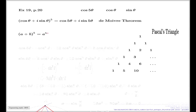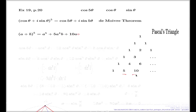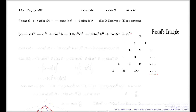Here's the expansion: a plus b to the power of 5. We have a^5, then 5 from here, 10 from here, another 10 from the symmetrical side, another 5 from the symmetrical side, and finally b^5. You can do that if you know the binomial formula.